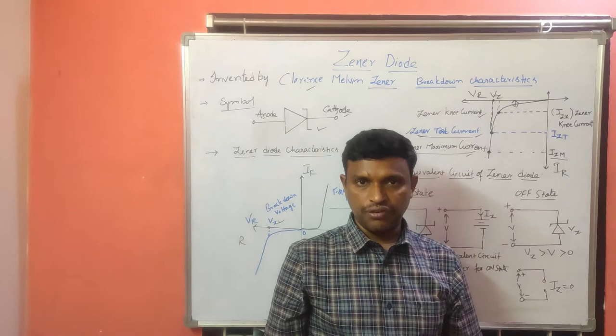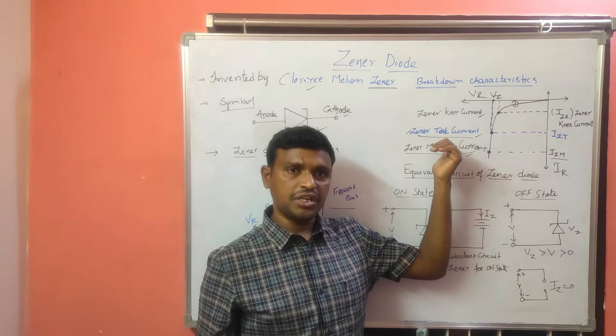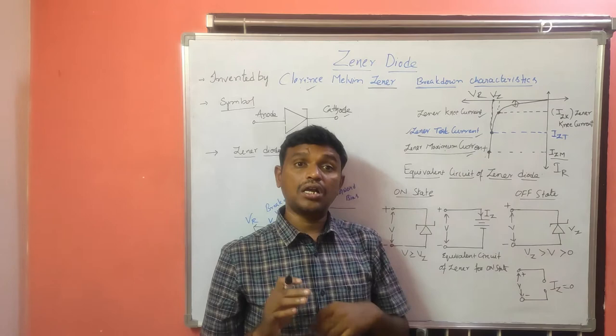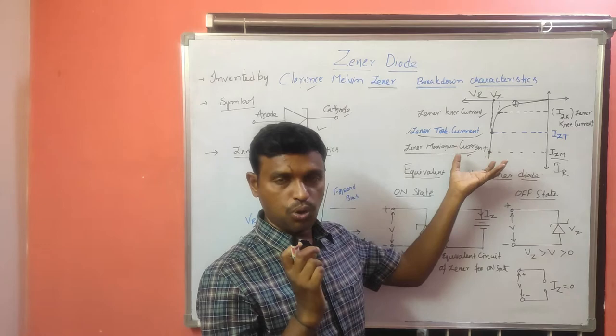In a normal PN junction diode, if the breakdown appears, the junction will break down. But here it is not the case. The GINA diode can be operated in only the reverse bias condition, and the GINA diode can also be said to operate only in the breakdown region. That is why we are dealing with the reverse bias characteristics only.